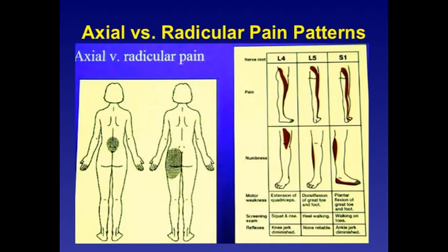The L5 pattern: pain typically extends toward the lateral ankle with numbness in the lateral shin. The screening exam is heel walking and there are no reliable reflexes. S1 pain runs through the posterior portion of the thigh, posterior hamstrings, down toward the lateral ankle and heel, and the lateral aspect of the foot. The screening exam for S1 is walking on the toes, and the ankle jerk is usually diminished.